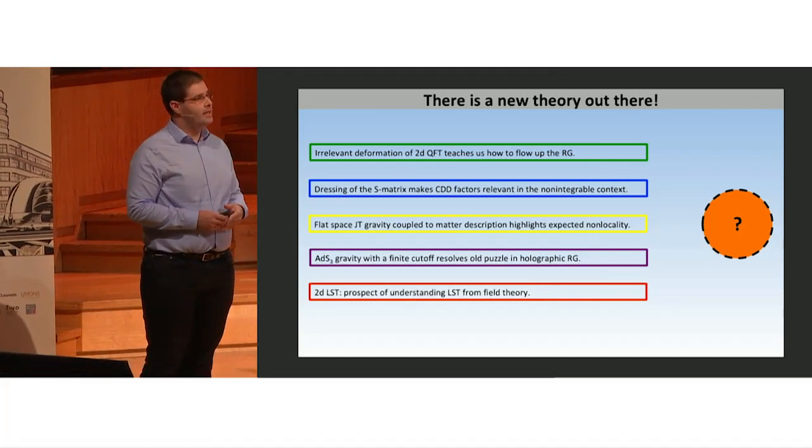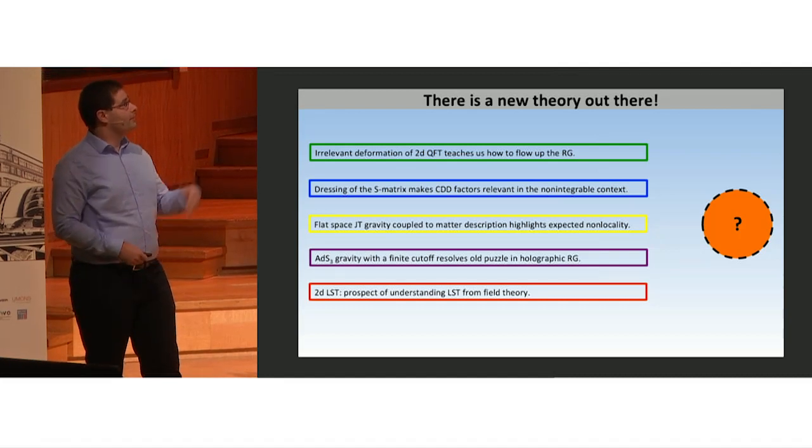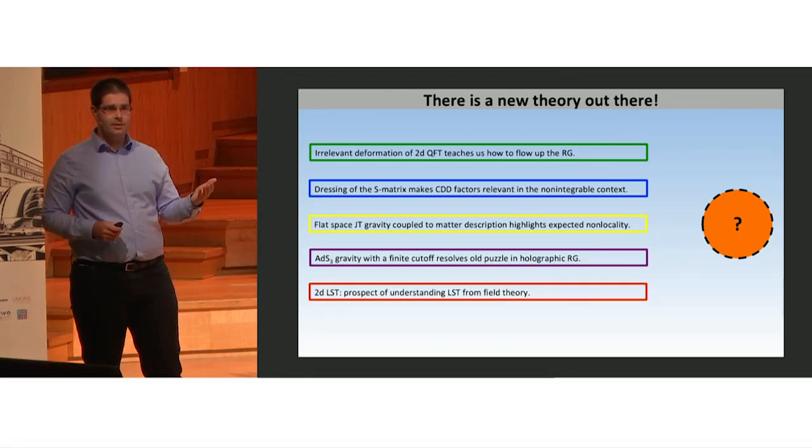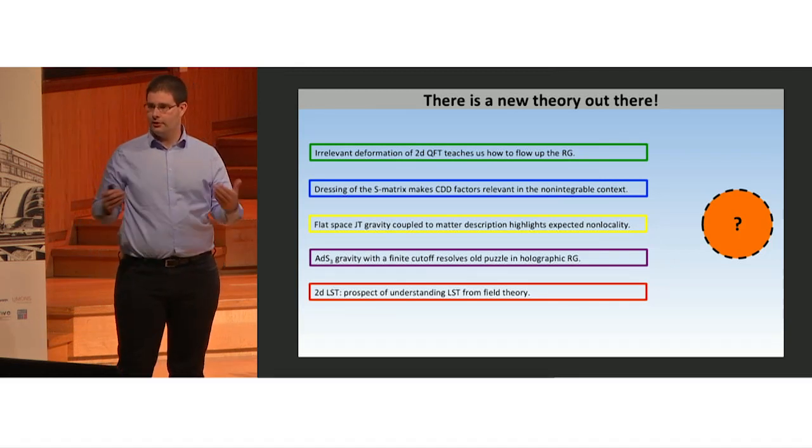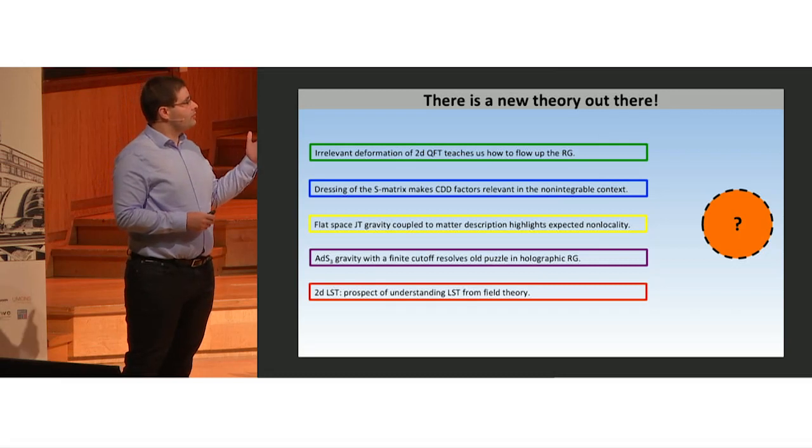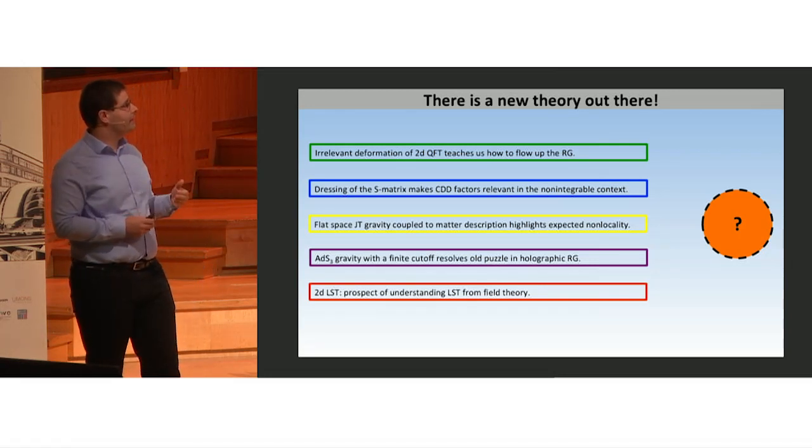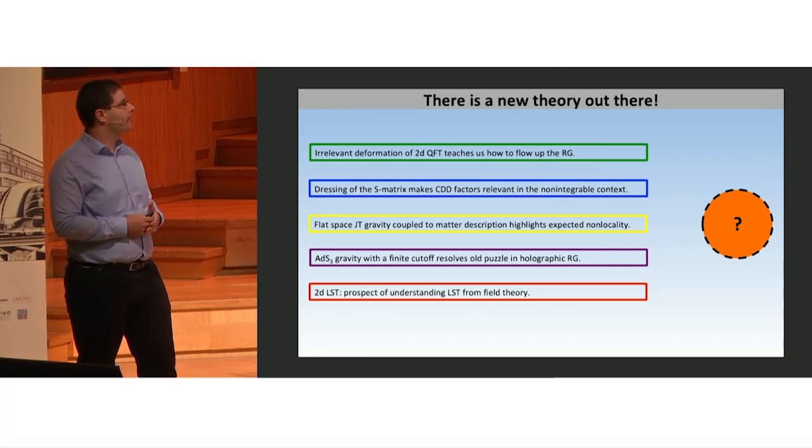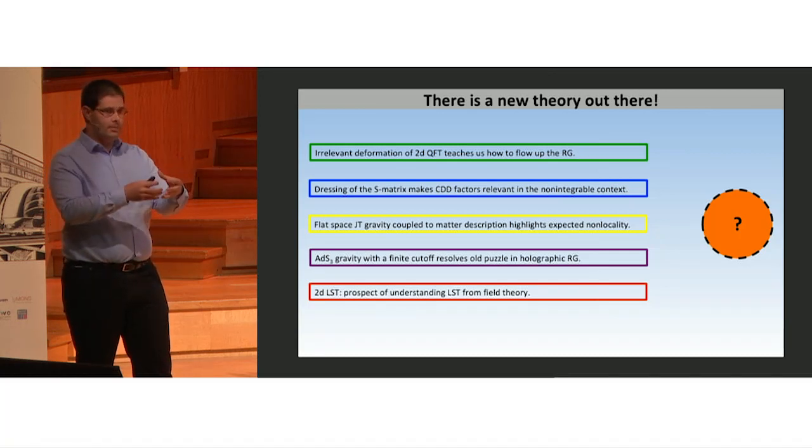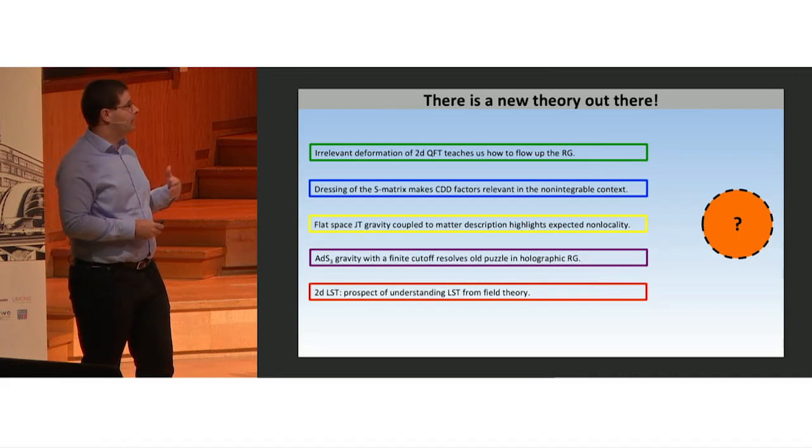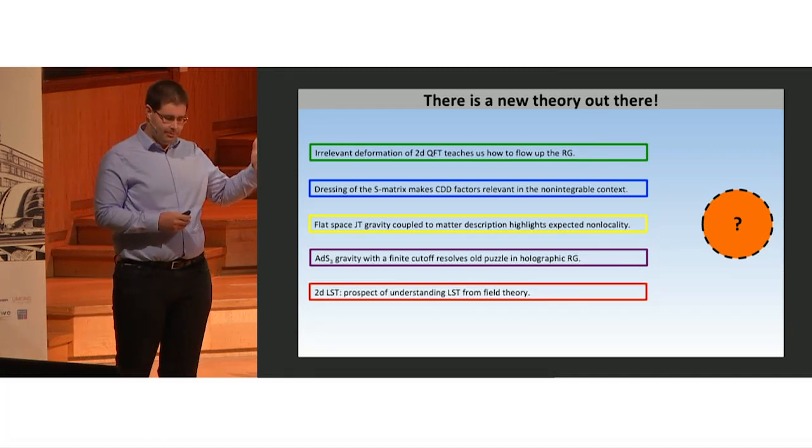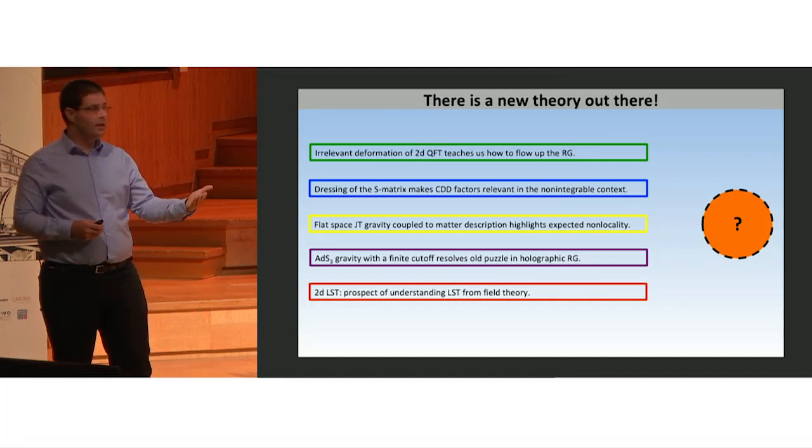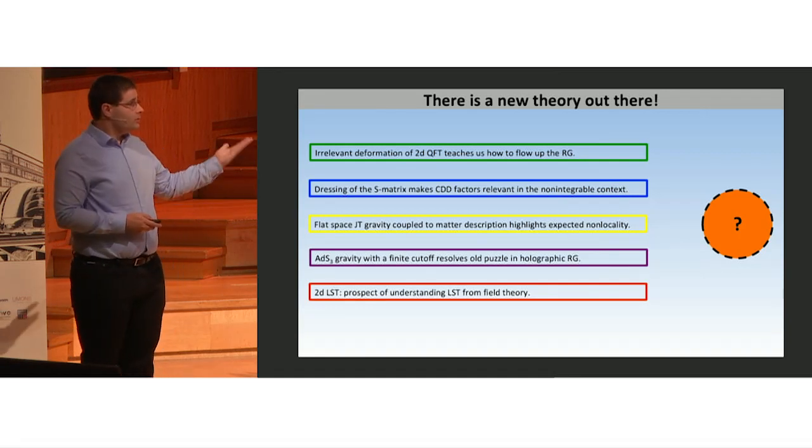Describing the TT-bar deformed theory as an irrelevant deformation of a 2D QFT teaches us about how to flow up the RG flow. Dressing of the S-matrix by phases is familiar from integrability where it's called the CDD factor, but now we can lift this to the non-integrable context. The description coupled to Jackiw-Teitelboim gravity highlights the expected non-locality of the theory. The holographic dual in terms of ADS gravity with a finite radial cutoff resolves long-standing puzzles in holographic RG, and it provides a promise of understanding little string theory in terms of field theory, not just from string theory.